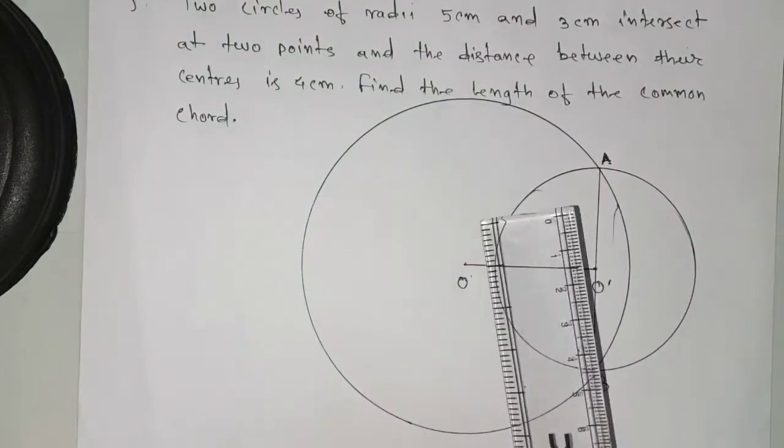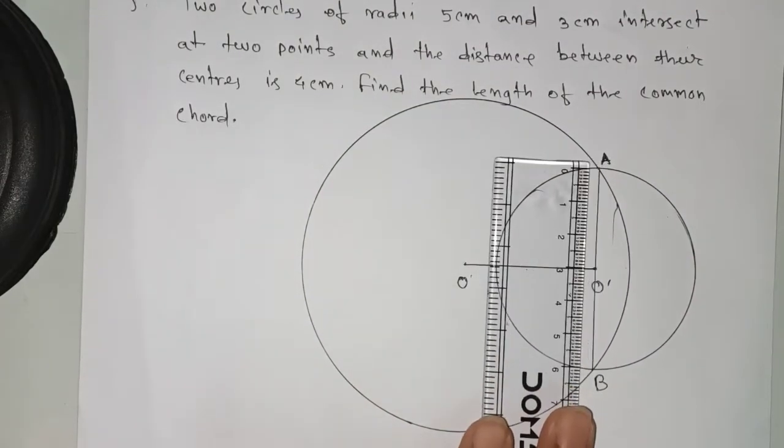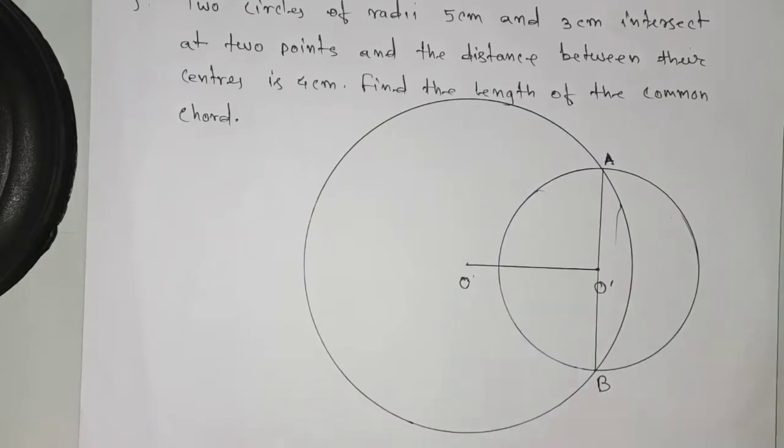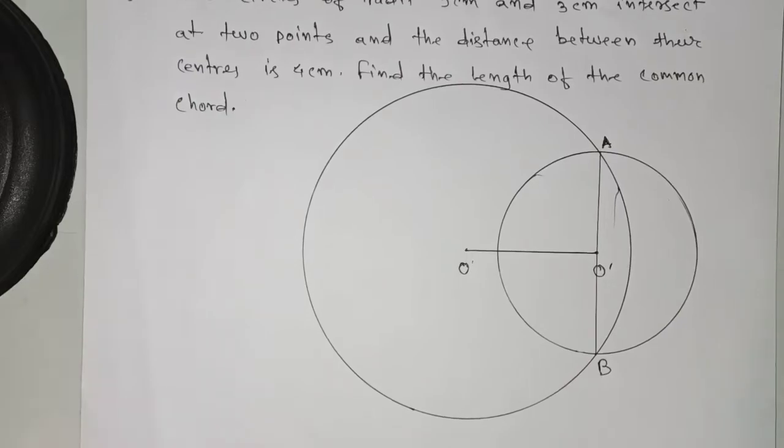If you take the measurement here, O to A is three centimeters and this is also two centimeters. From construction you can say that AB, the common length, is six centimeters.